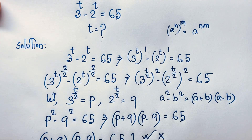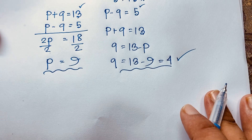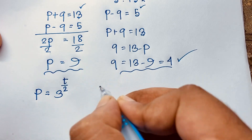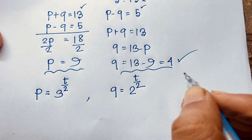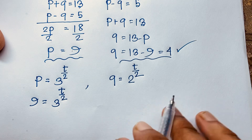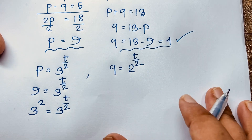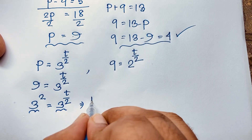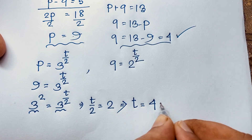Our target is to find t. Recalling our substitution, p equals 3 to the power t over 2, and q equals 2 to the power t over 2. Since p equals 9 and 9 equals 3 to the power 2, we have 3 to the power t over 2 equals 3 squared. Since the bases are the same, the exponents are equal: t over 2 equals 2, so t equals 4.